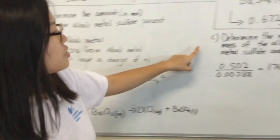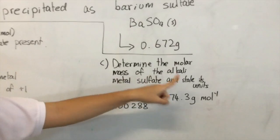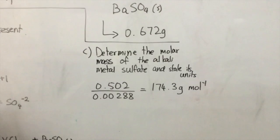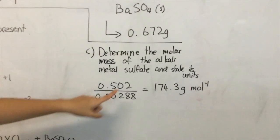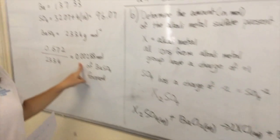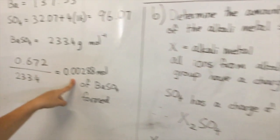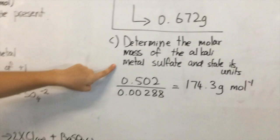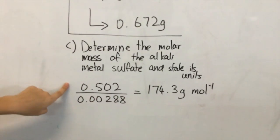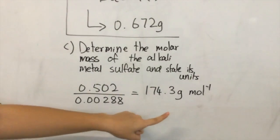The third question is to determine the molar mass of alkaline metal sulfate and state its units. We have the moles of alkaline metal sulfate, which is 0.00288, and the grams is already given from the question, 0.502. Gram divided by moles gives you grams per mole.